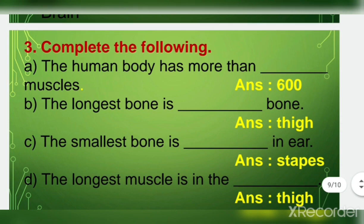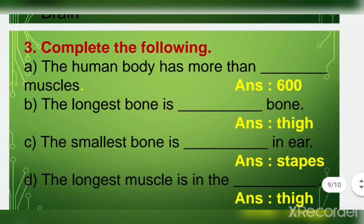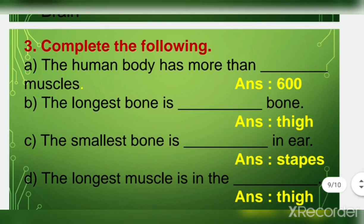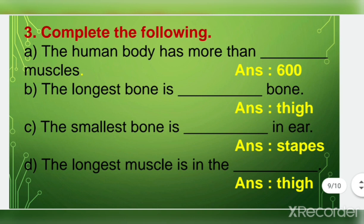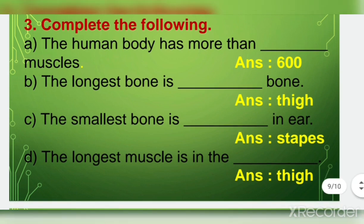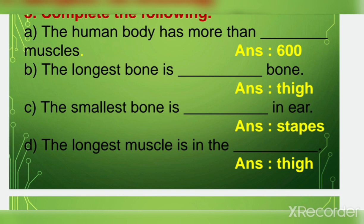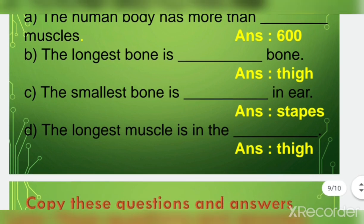Complete the following: the human body has more than 600 muscles. The longest bone is the thigh bone. The smallest bone is the stapes, in the ear. The longest muscle is in the thigh.